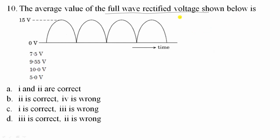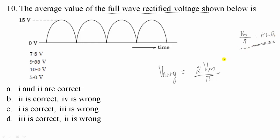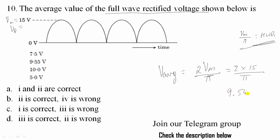Tenth question: find the average output voltage in the case of a full wave rectifier. V_average = 2Vm/π for full wave and bridge rectifiers, and Vm/π for half wave rectifier. The value of Vm is given as 15 volts. So 2×15/π = 30/3.1415 ≈ 9.55 volts. Statement 2 is correct, statement 4 is wrong. Option B follows.